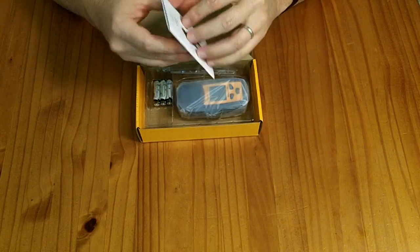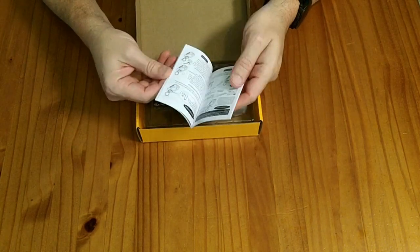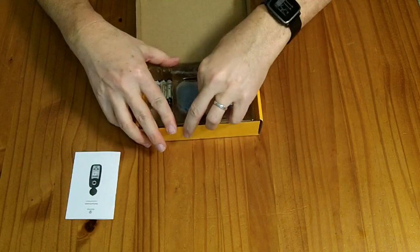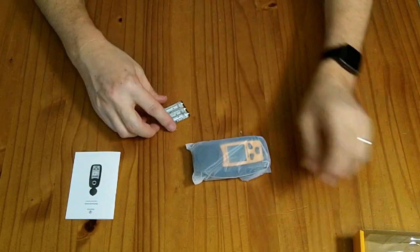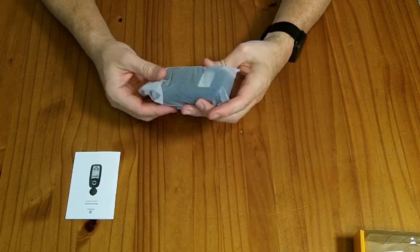So in the packaging, you get a little manual here that tells you how to use it, the actual meter itself, and a three-pack of AAA batteries to power said meter.